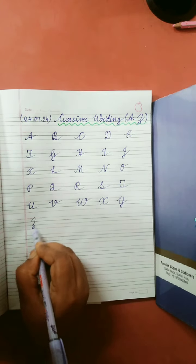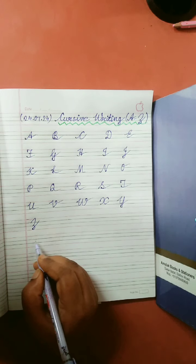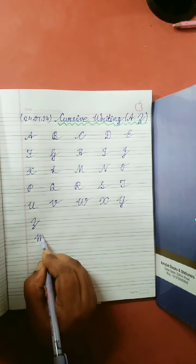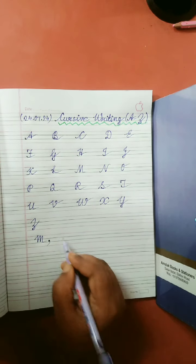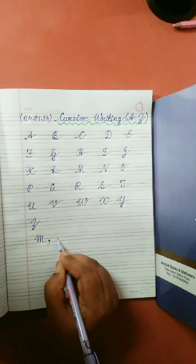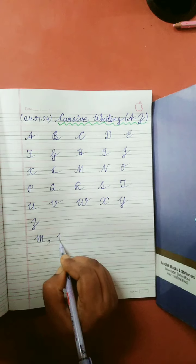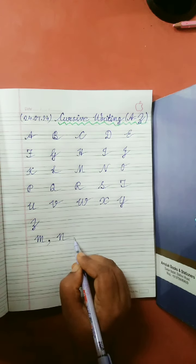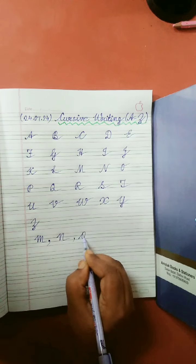Sometimes N is written as M, and N is written like N, and O is written like this.